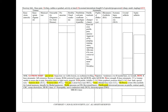Patellar tendinitis, also commonly known as jumper's knee, will present with knee pain inferior to the patella — also anterior — because this involves the tendon connecting the patella. The pain will be aggravated by jumping, running, stairs, or squatting, and alleviated by rest, conservative management, ice, and NSAIDs.